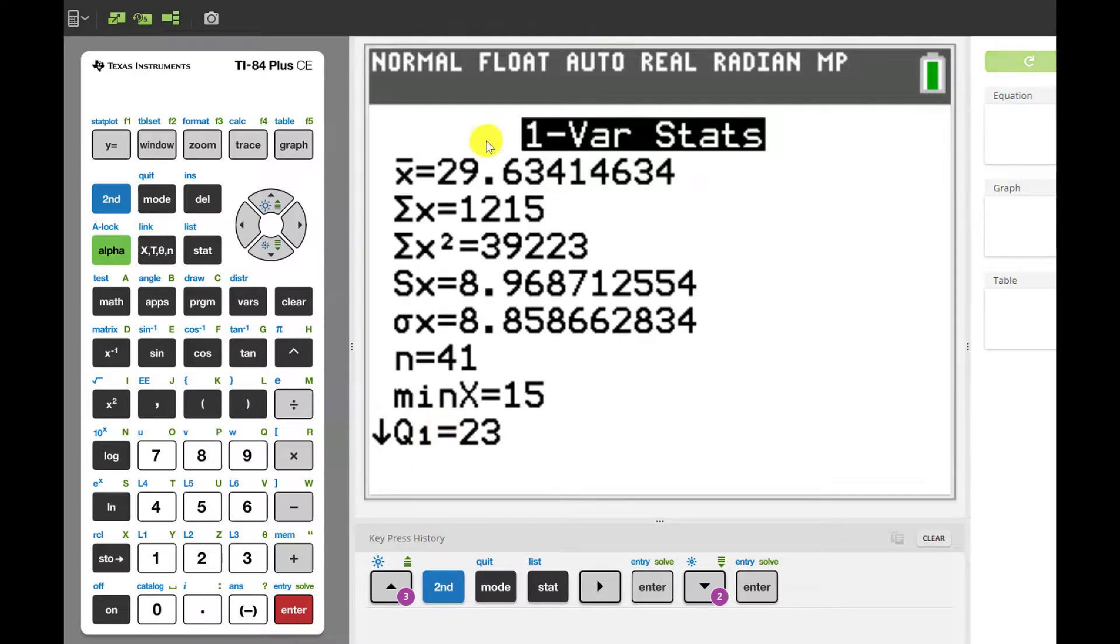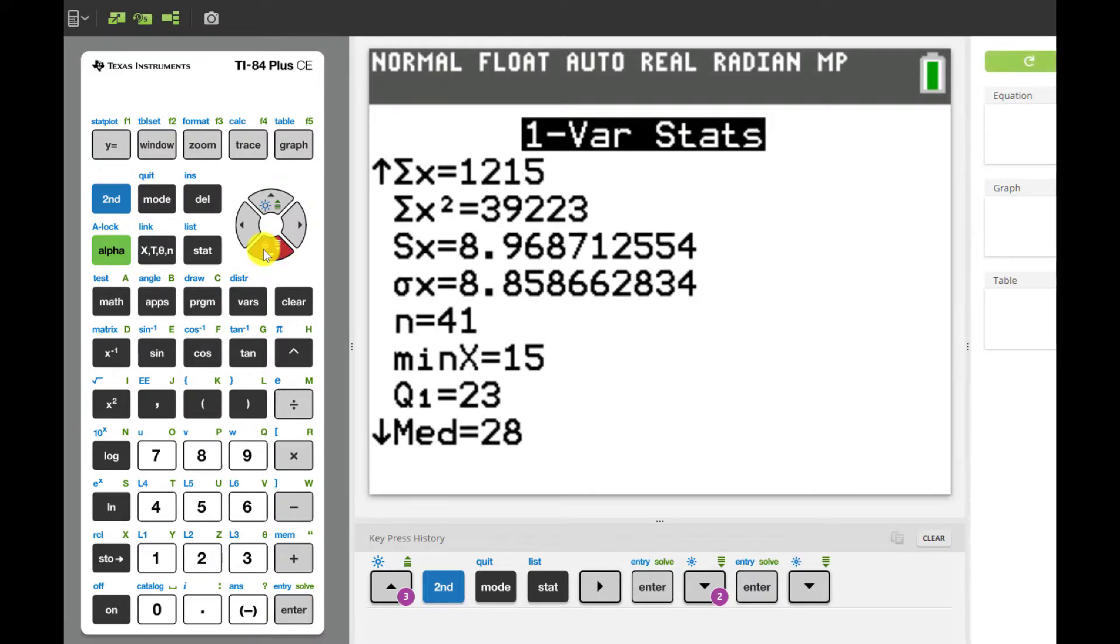It takes a second, but then you'll see we have a ton of information here. What we want to look at first is our x bar. This is your sample mean. We're going to learn a lot more about notation in this class. But x bar is going to be your notation for a sample mean. So our sample mean was 29.63 and then a bunch more. We've got a bunch of other stuff here that we'll get to later. But right now, I'm looking for my median. And so my median was 28. So as we saw, your mean was larger than your median. Not too much, but that's definitely due to that right skewness.